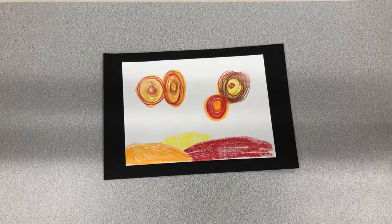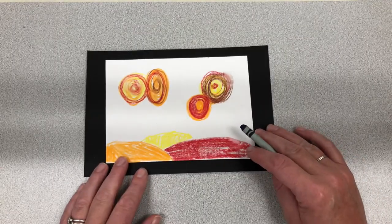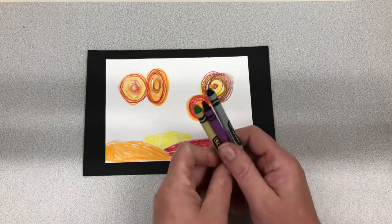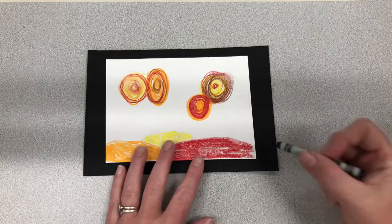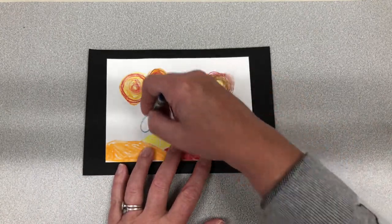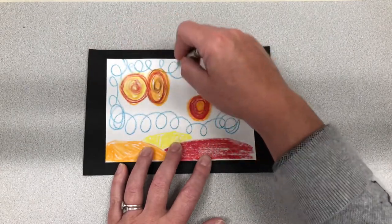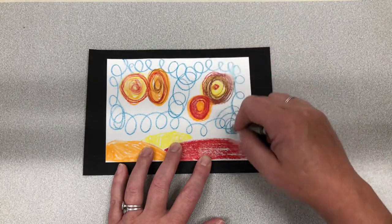Now I'm going to reach into my crayon container and find a cool color. Cool colors are colors like blue, purple, and green. I'm going to choose blue for the sky. Now for the sky, I'm just going to do some loop-de-loops of blue. I'm not trying to color the whole thing in perfectly. I'm kind of putting a texture in the sky.